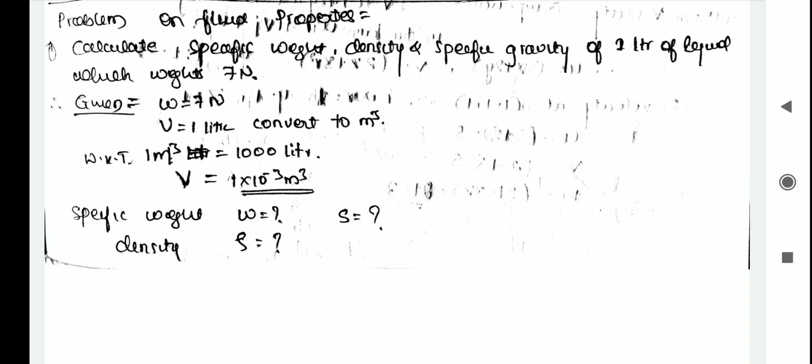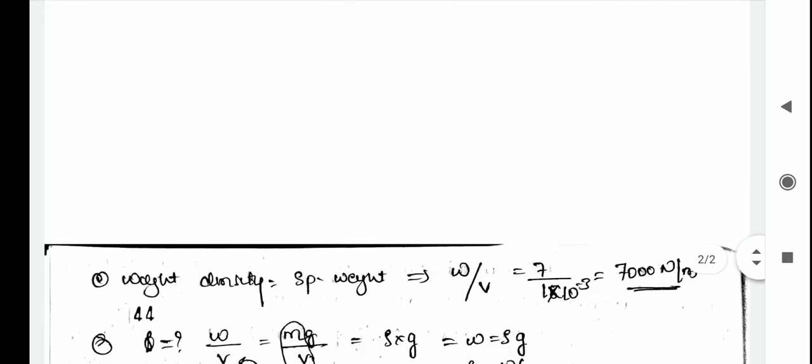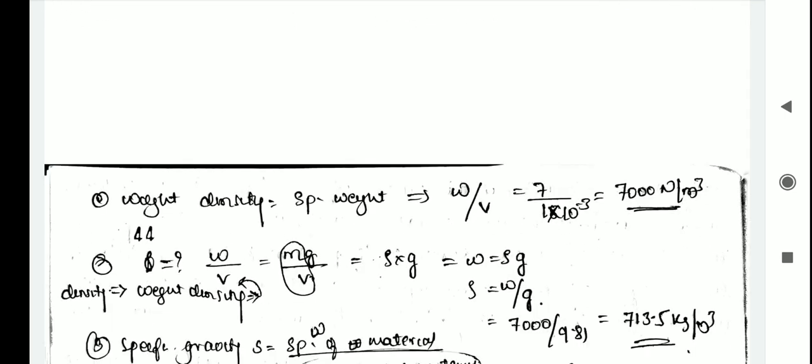We need to find specific weight, density, and specific gravity. Specific weight is weight divided by volume. Weight is seven newton divided by volume 1 × 10⁻³ meter cube, giving seven thousand newton per meter cube. So weight density is 7000 N/m³.